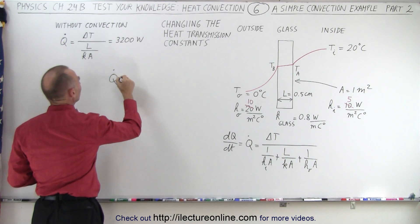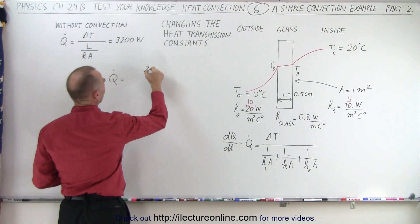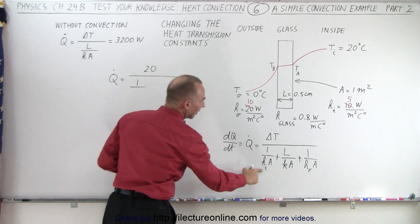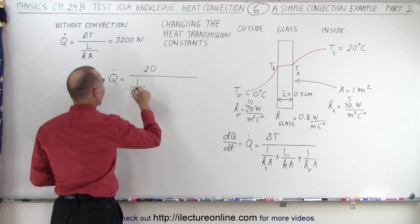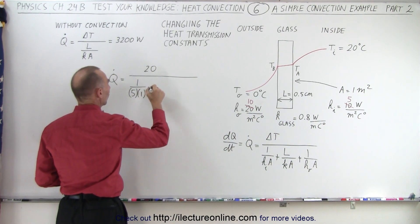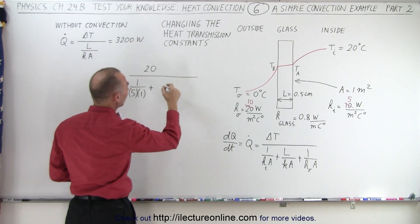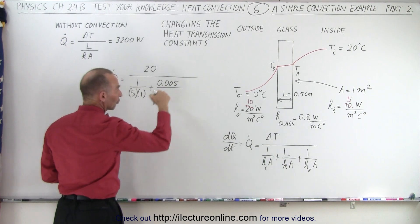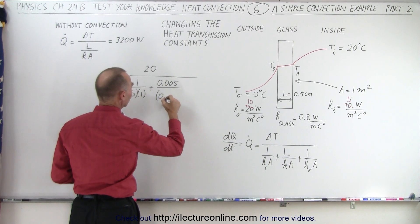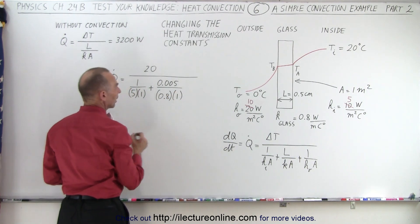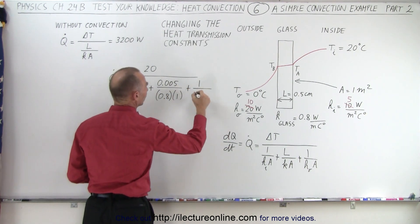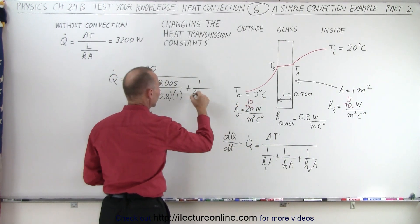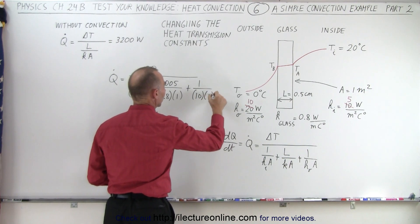Q dot, the heat flow, is going to be equal to the change in the temperature, which is still 20 centigrade degrees, divided by 1 over, now on the inside instead of 10, we're going to use 5, and the cross-sectional area is 1, plus the path through the window is 0.005 meters, that's centimeters converted to meters, the constant is 0.8 for glass, and it's still 1 square meter in area, plus 1 over, now the transmission constant is going to be 10 on the outside, and the cross-sectional area is equal to 1.